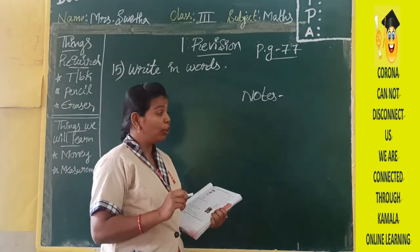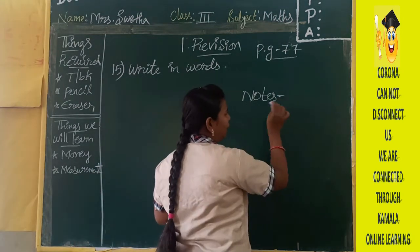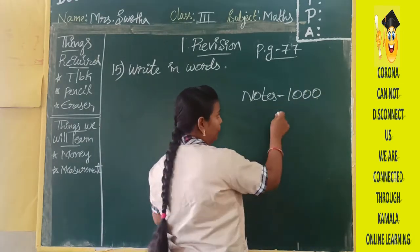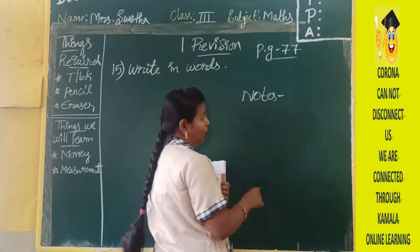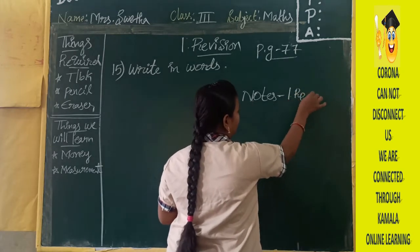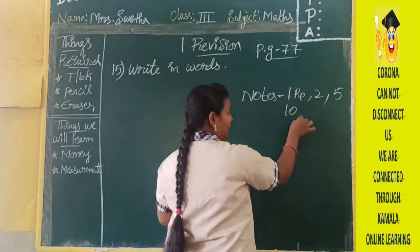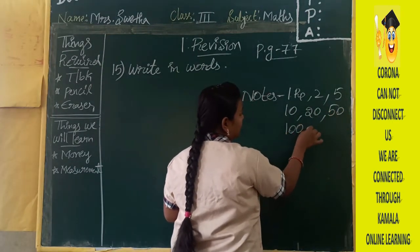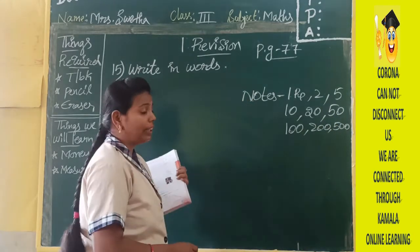Notes are of different values. You can have notes of any number like one rupee, two rupees, five rupees, ten rupees, twenty rupees, fifty rupees, hundred rupees, two hundred, five hundred — these are the different kinds of notes you have.